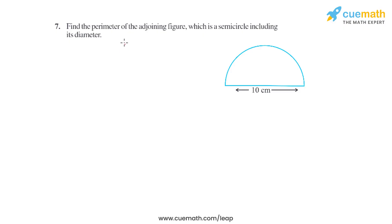Question 7 of this exercise is: Find the perimeter of the adjoining figure, which is a semicircle including its diameter. So we have to find the perimeter of a semicircle, and the perimeter of a semicircle is basically half of the circle.